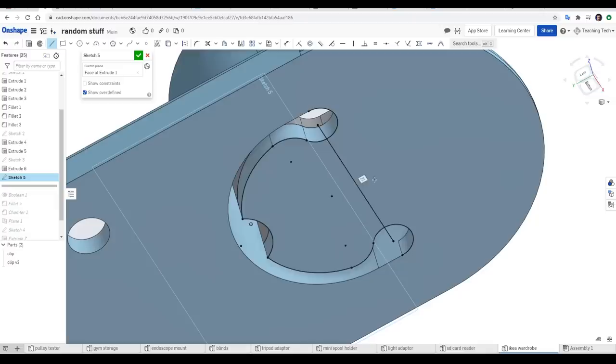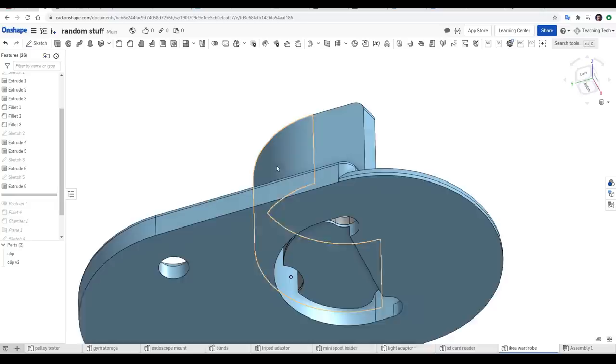To smooth out the step on the underside, I added a chamfer and then a fillet to get a nice transition. There was a section that would require support when printing, but it would be completely hidden on the final model.